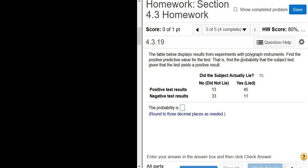Let's read the question. Find the positive predictive value for the test. So if we're not sure what that is, it clarifies it. That is, find the probability that the subject lied. Okay, I'm going to stop reading and write that down. So P lied.